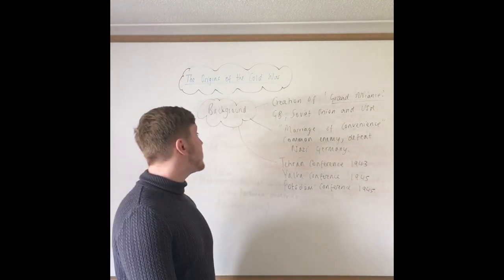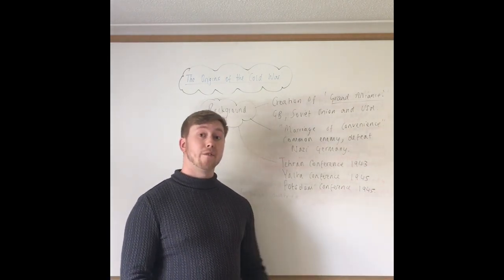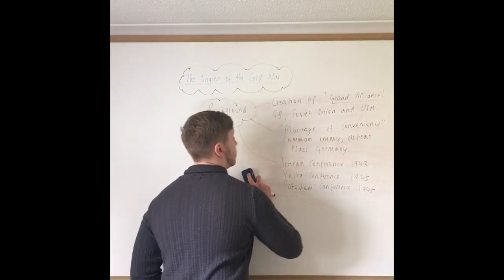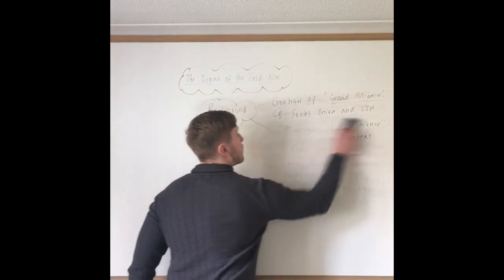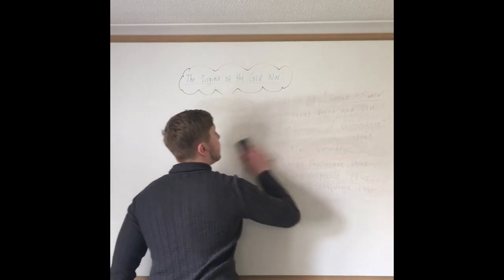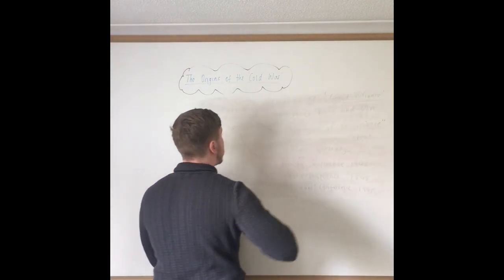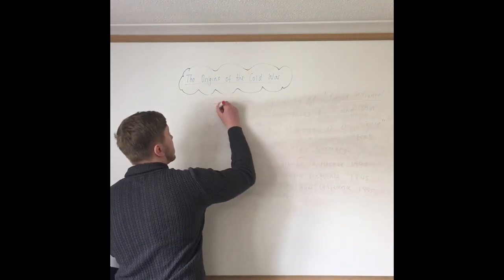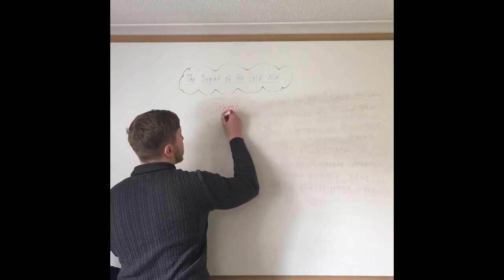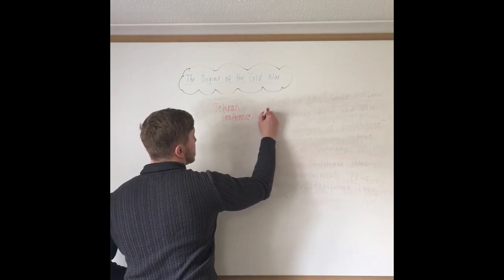So, that is basically the background of the beginning of the Cold War. We're going to go through the three different conferences. What I'd like you to do now is just write down the first one, which is the Tehran Conference, which was 1943.